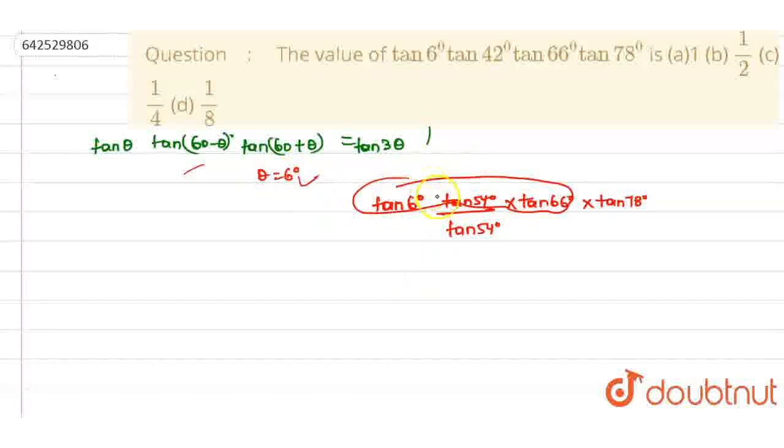Now, can you see this is nothing but tan 3θ? This is the same equation where θ equals 6°, so I can say it is nothing but tan 3θ, that means tan 18°. Here, it is tan 78° and here it is tan 54°.